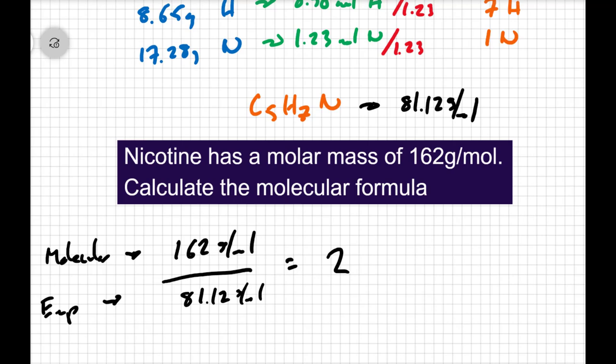Which means that I'm going to have C5H7N times 2, or more simply written as C10H14N2. And that is the molecular formula for nicotine.